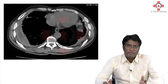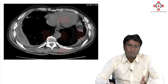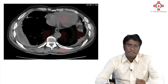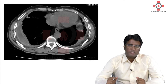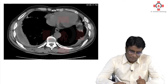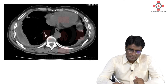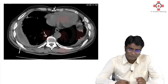Now, please look at this image. In this image, what do you think is the diagnosis? Do you think it is right pleural effusion, left pleural effusion, right empyema, or left empyema? Let us look into this image carefully again. The vertebral bodies are white, you can see the sternum, the ribs are also white — so we know this is a CT scan.